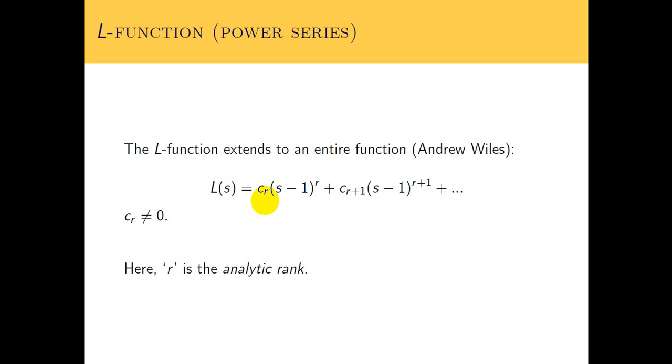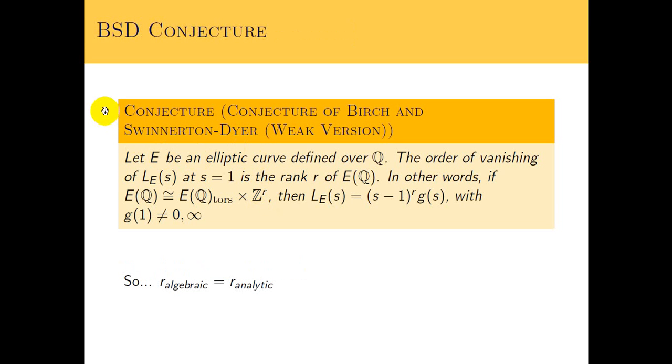That's the analytic rank of the elliptic curves. So now we've talked about both of them, so now it makes sense to state our conjecture. This is the Birch and Swinnerton-Dyer conjecture. It says that if we have an elliptic curve defined over the rationals, the order of vanishing at s equals 1 of the L function is the rank of the elliptic curve, is the algebraic rank. So those two things are equal. The second sentence is restating it in a slightly different way, a slightly more technical way. So that's the conjecture.